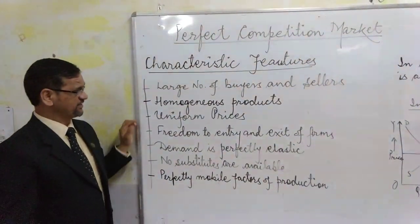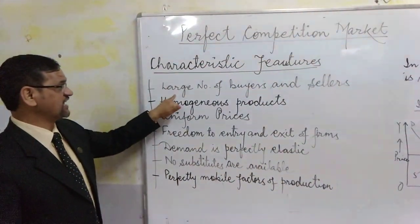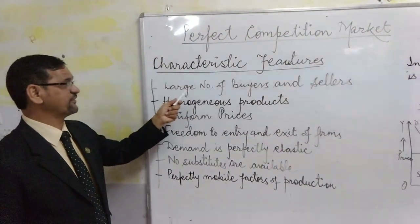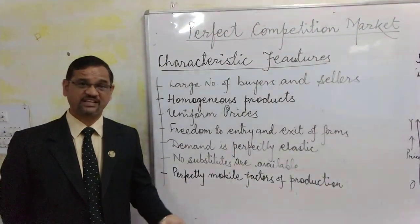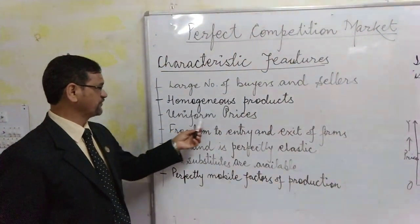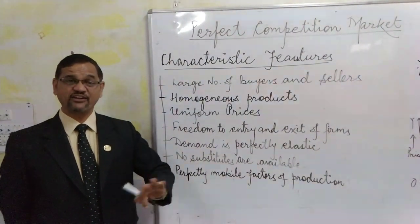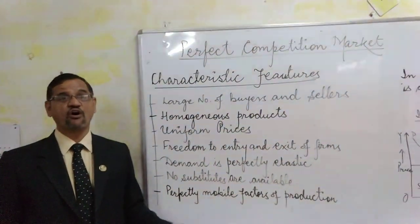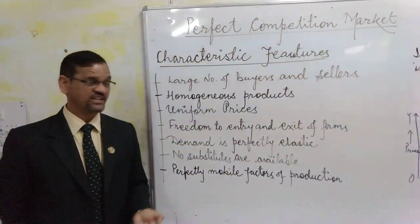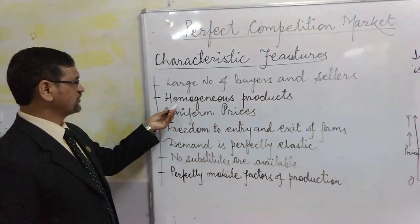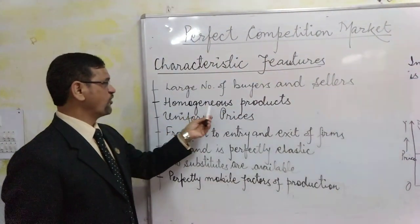When I talk about perfect competition market, the first characteristic feature is large number of sellers and buyers. There are so many buyers and sellers that they cannot influence the price in the market. Therefore we have uniform prices. No seller is ready to sell at a lower price to reduce his profit margin, or no buyer is ready to buy at a higher price to reduce his satisfaction level. Therefore we have identical, homogeneous products all over the market.